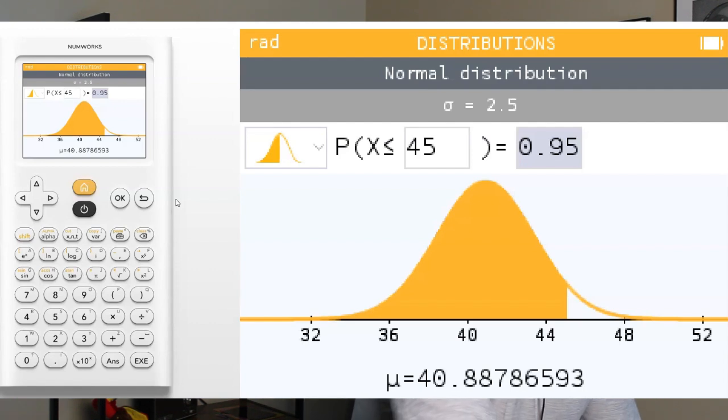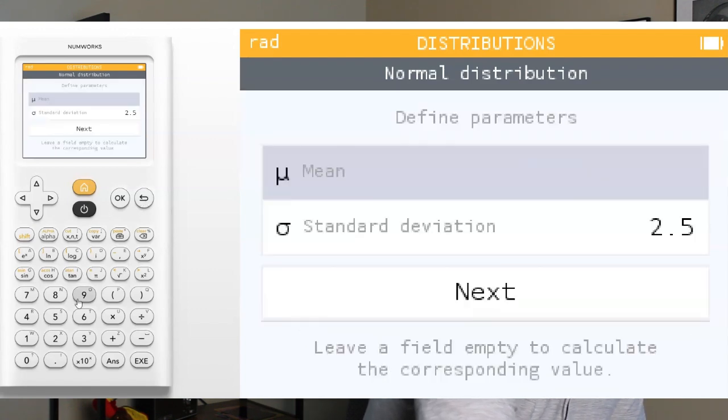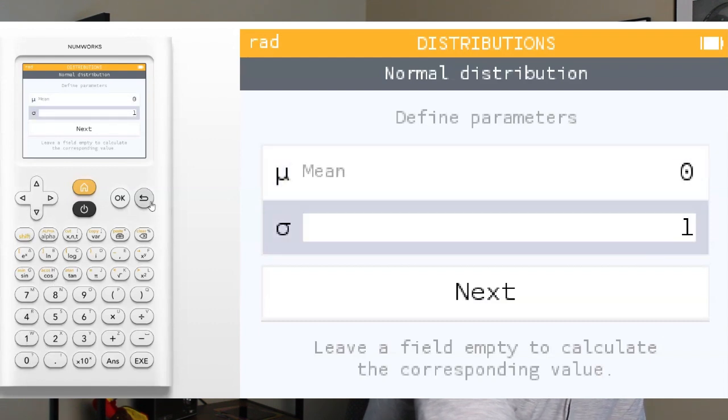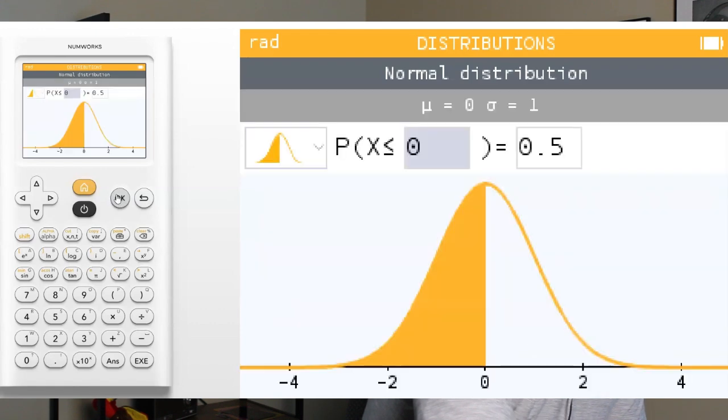Now, if you're working with Z-scores, for example, in inference, and you have to use a mean of 0 and a standard deviation of 1, no worries. All you're going to do is go back here, type in a mean of 0 and a standard deviation of 1, and now you're working with the standard normal model where you're talking about Z-scores.